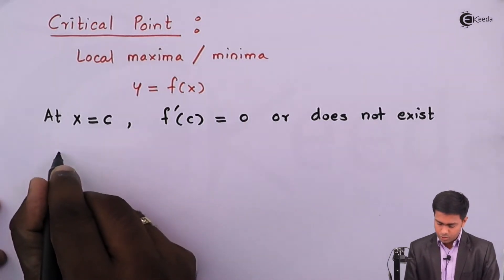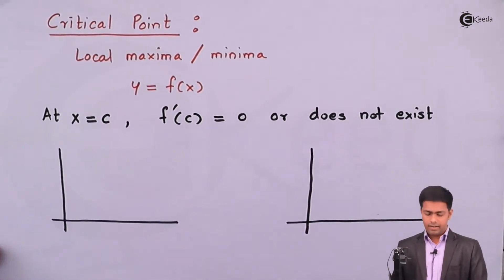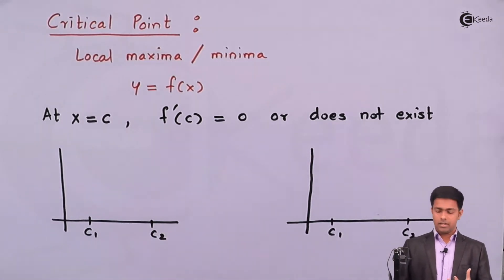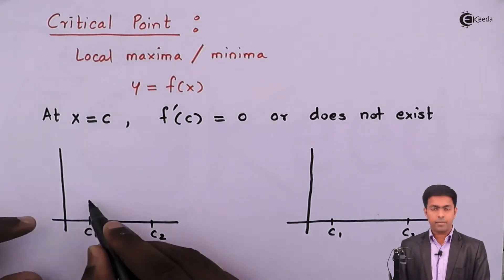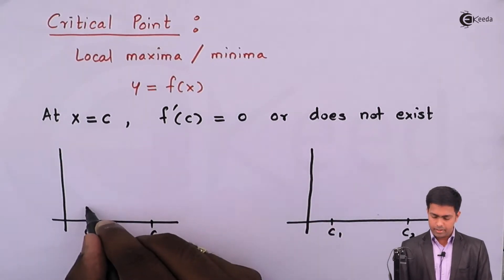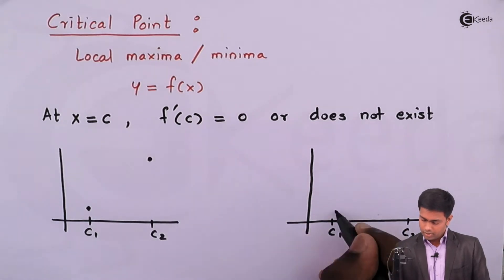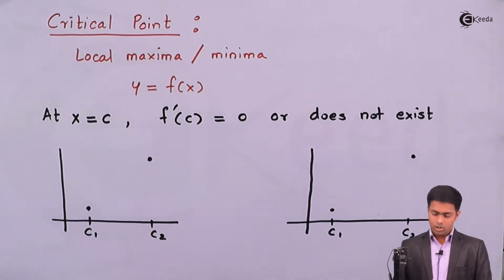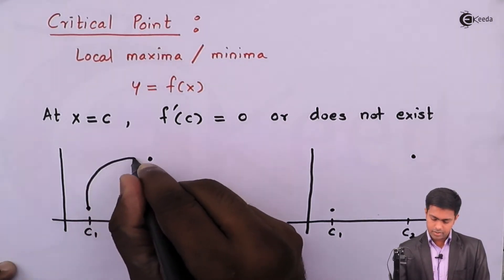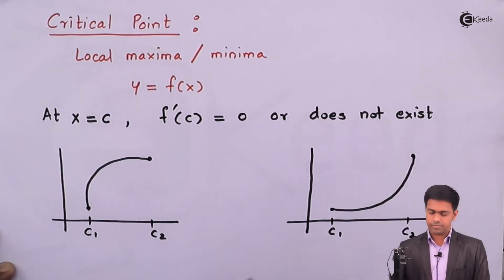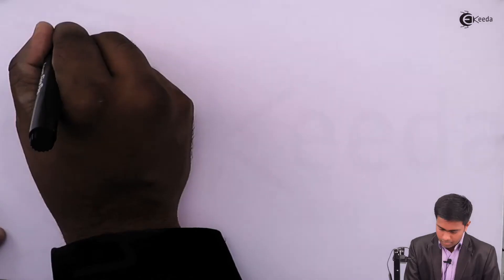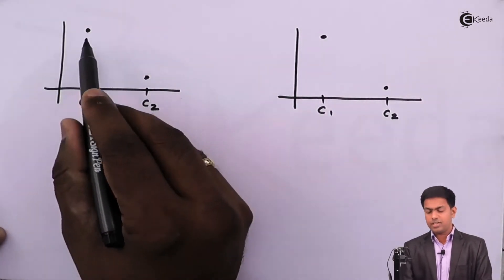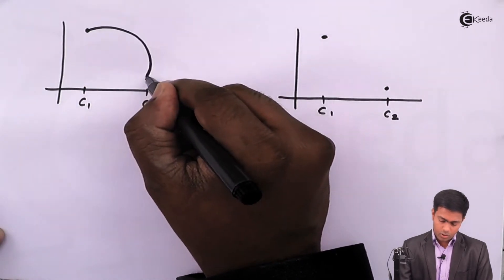There are four cases between two critical points c1 and c2. Let's say at c1 we have minima and at c2 we have maxima, or vice versa. Between these two points the curve might go like this or it might go like this — giving us four possible shapes of the curve.